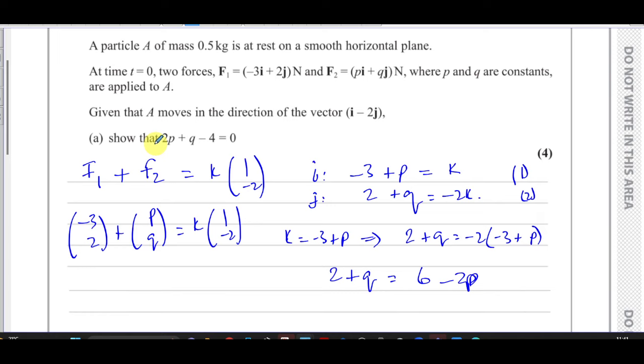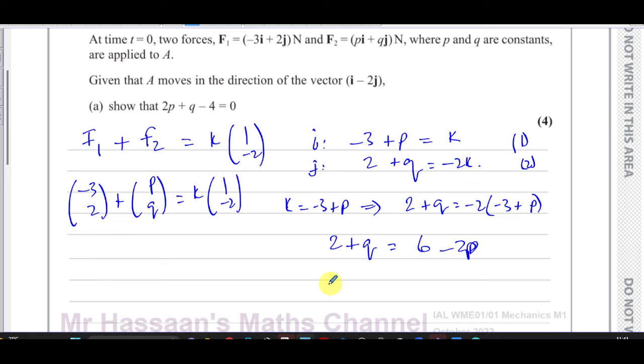Now we want to show that this becomes like that. The p and the q both have to be on the left side with the p positive. So you add 2p to both sides. So 2p plus q and you have 2 minus 6 which is minus 4 equals 0. And that's exactly what we had to show.